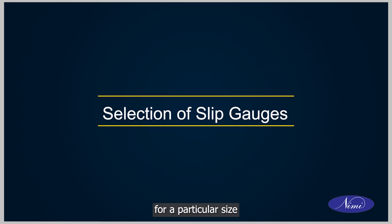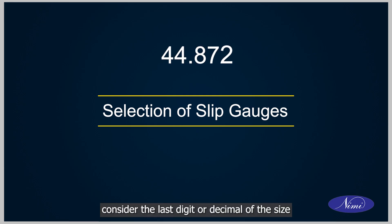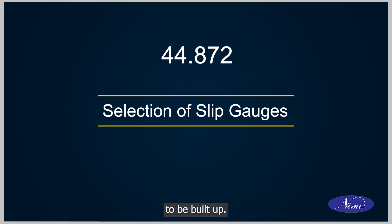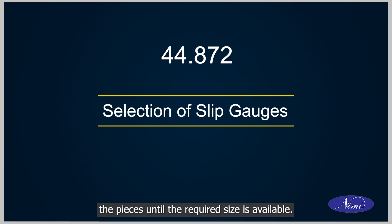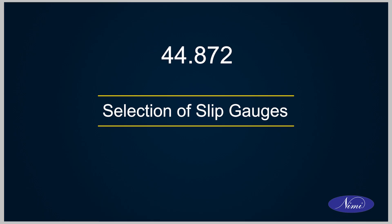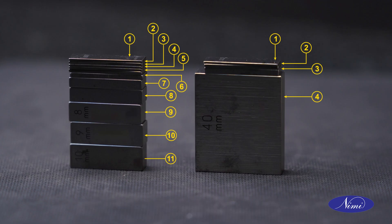While selecting slip gauges for a particular size from the available set, first consider the last digit or decimal of the size to be built up, then consider the last two digits of the subsequent value, and continue to select pieces until the required size is obtained. Use a minimum number of blocks as far as possible while building up a particular dimension.